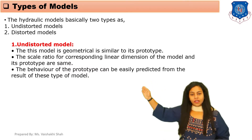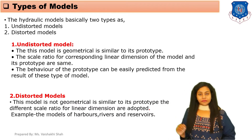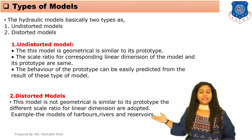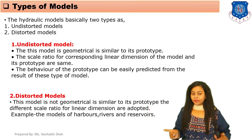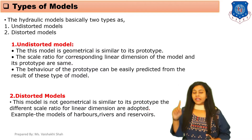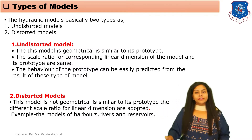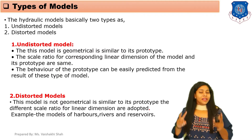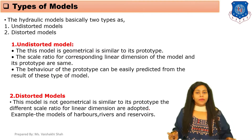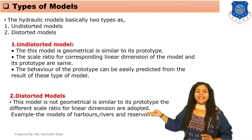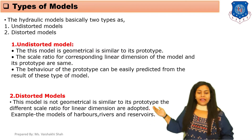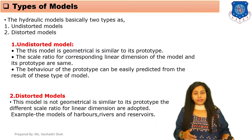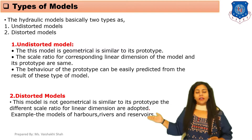In a distorted model, the model is not geometrically similar to its prototype. If the length-to-width ratio for the model and the length-to-width ratio for the prototype are not the same in value, that type of model is called a distorted model. Rivers, harbors, or reservoirs are examples of distorted models.